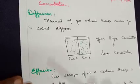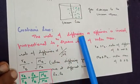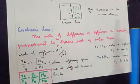So, Graham put this diffusion and effusion concept together and brought out the law which is described as the rate of diffusion or effusion. You know the meaning?